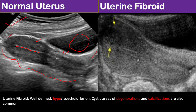The posterior myometrium is homogeneous without any focal lesions, but in the anterior myometrium you can see a well-defined heterogeneous iso- to hypoechoic lesion. This well-defined heterogeneous lesion within the muscular layer of the uterus is a uterine fibroid.